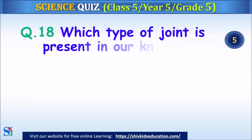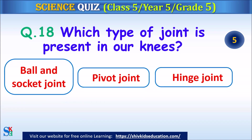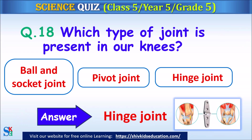Question 18: Which type of joint is present in our knees? Ball and socket joint, pivot joint or a hinge joint? The answer is a hinge joint.